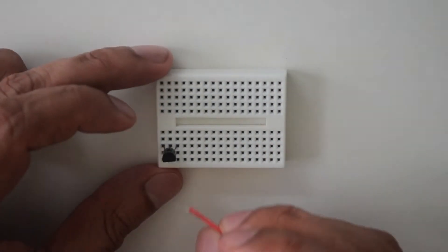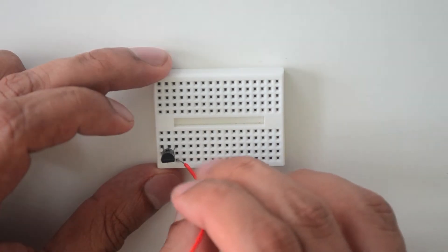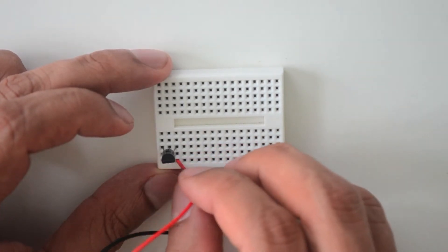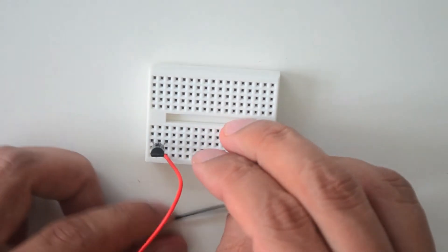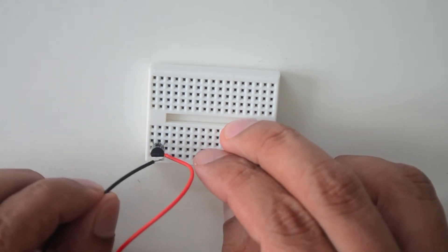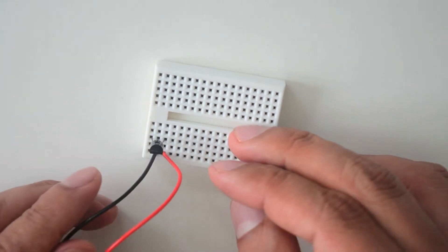Take the battery snap and place the red wire into a pin hole below the rightmost pin of the voltage regulator. Now place the black wire into a pin hole just below the middle pin of the voltage regulator.